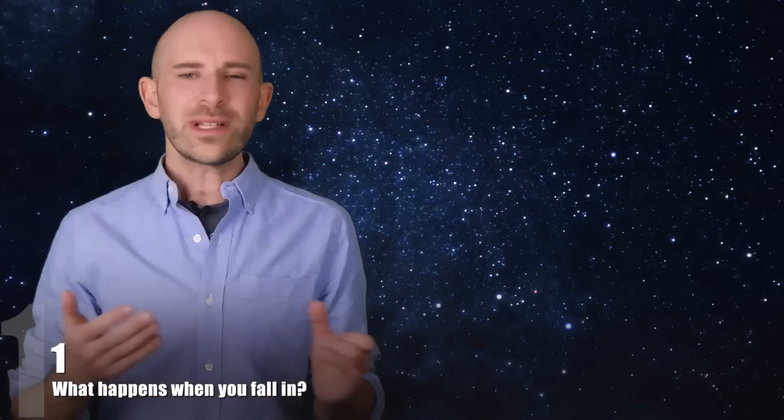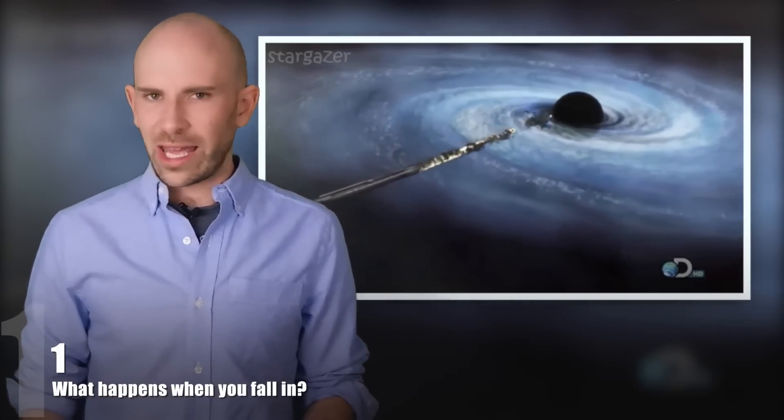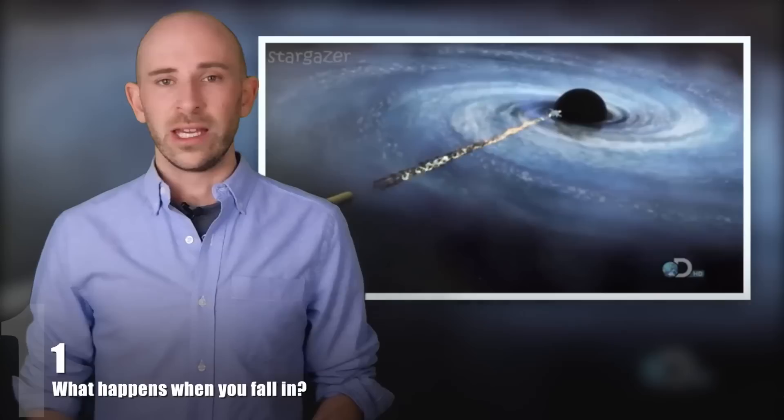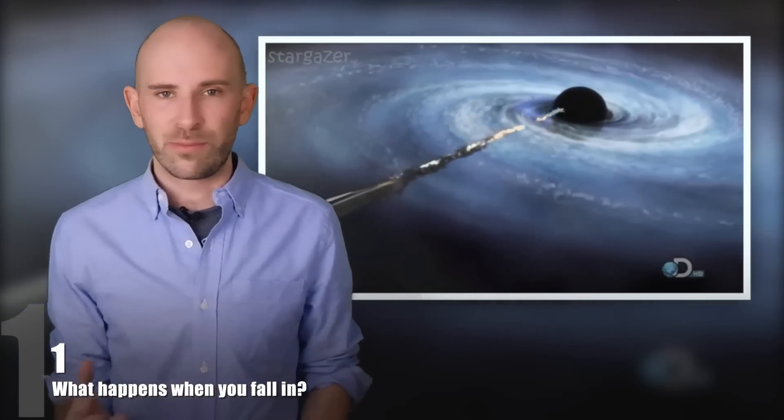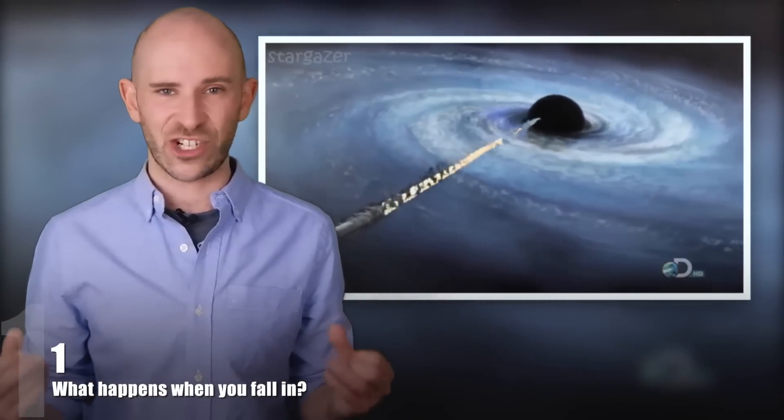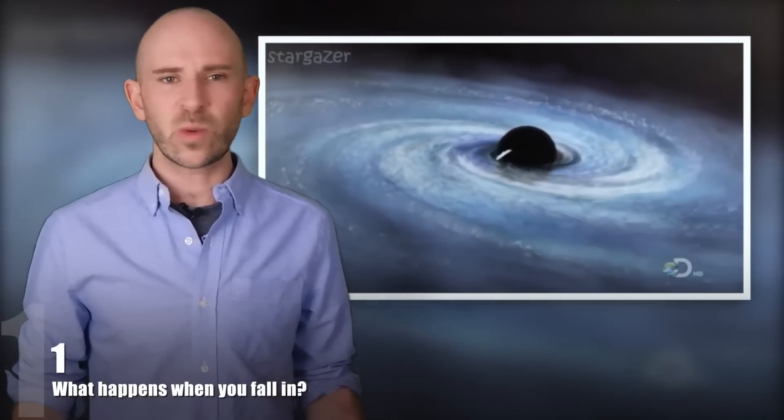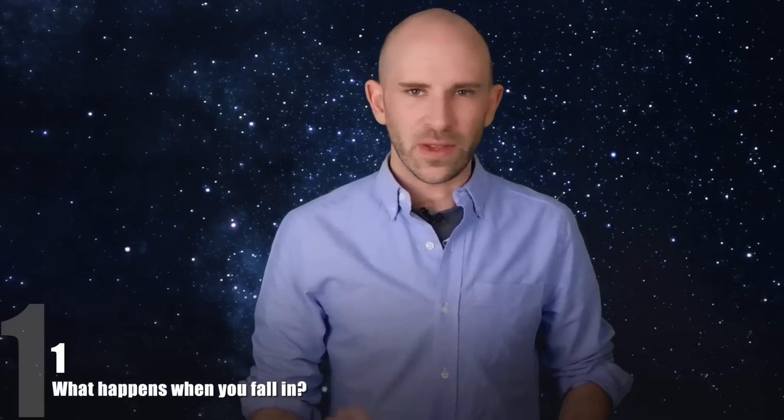1. What Happens When You Fall In? If you were to dive into a black hole that was the size of the Earth, your body would look like toothpaste coming out of a tube. Your body would be stretched out in what British astrophysicist Sir Martin Rees called spaghettification. Eventually, you would become a stream of subatomic particles that would swirl into the black hole.